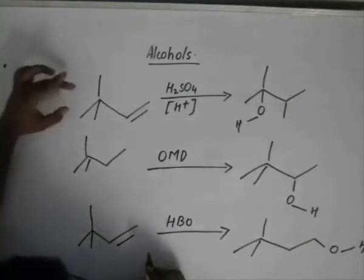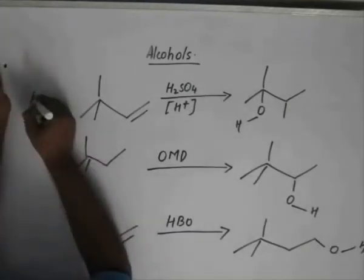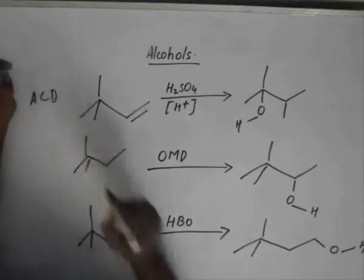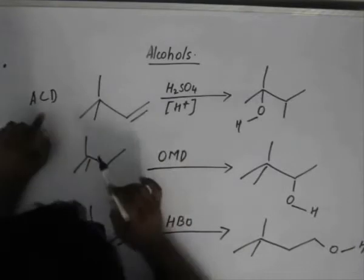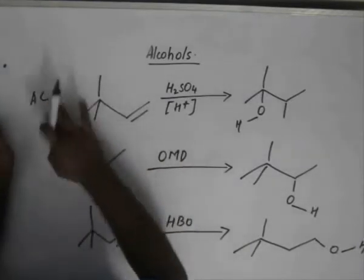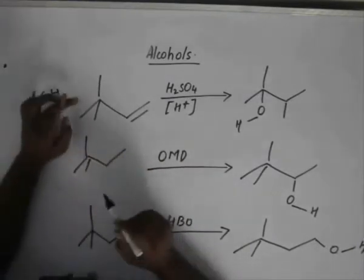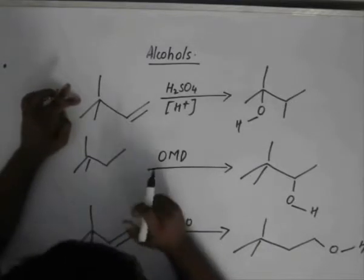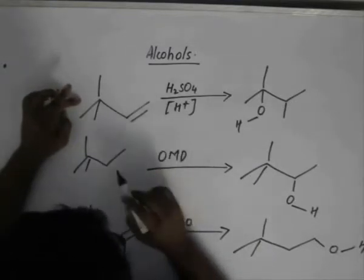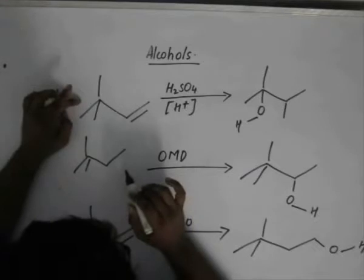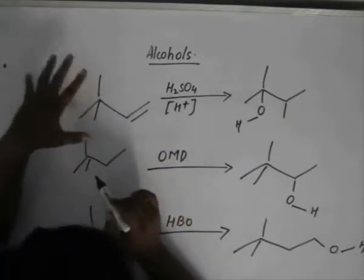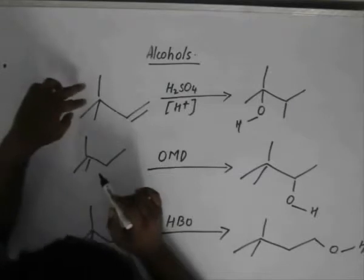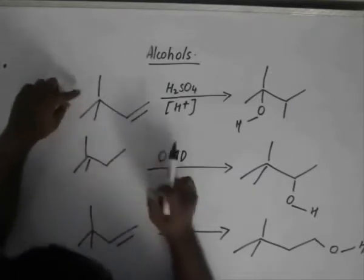So, in acid-catalyzed hydration, as we saw in the last class, acid-catalyzed hydration involves formation of carbocation, in which rearrangement may or may not happen. In this case, we see that rearrangement has taken place. The rearrangement was 1 to alkyl shift.